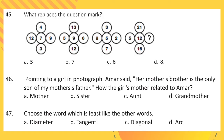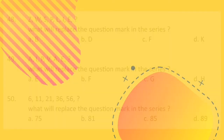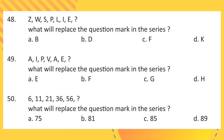Question 46: Pointing to a girl in a photograph, Amar said her mother's brother is the only son of my mother's father. How is the girl's mother related to Amar? Question 47: Choose the word which is least like the other words. Question 48: Z, W, S, P, L, I, question mark — what will replace the question mark in the series?